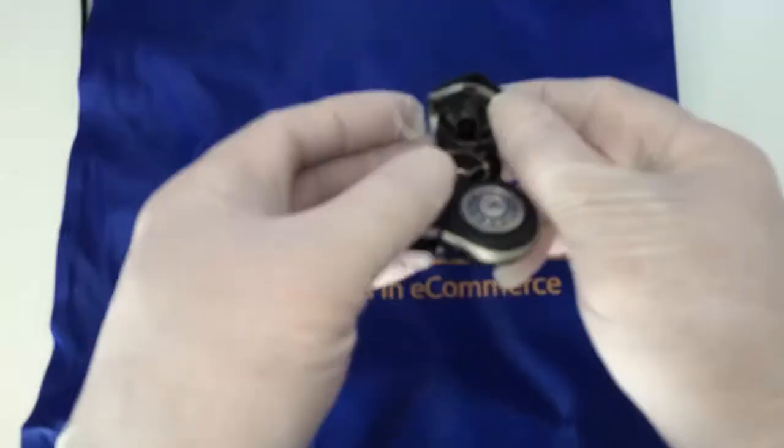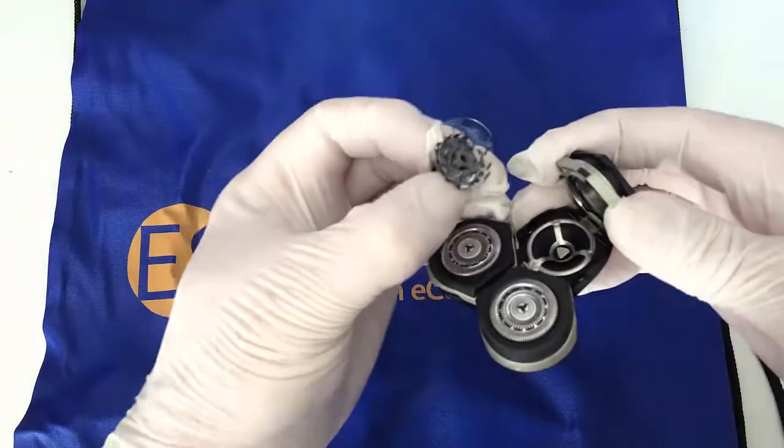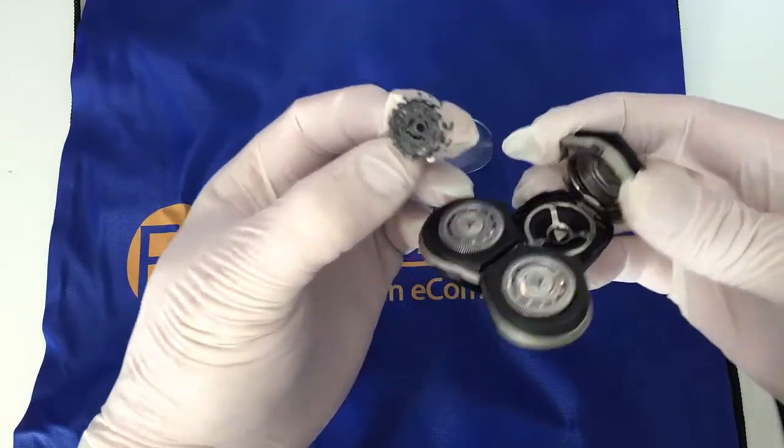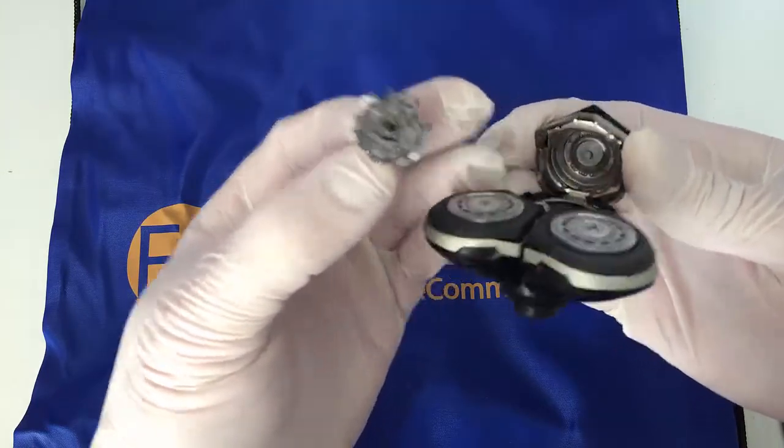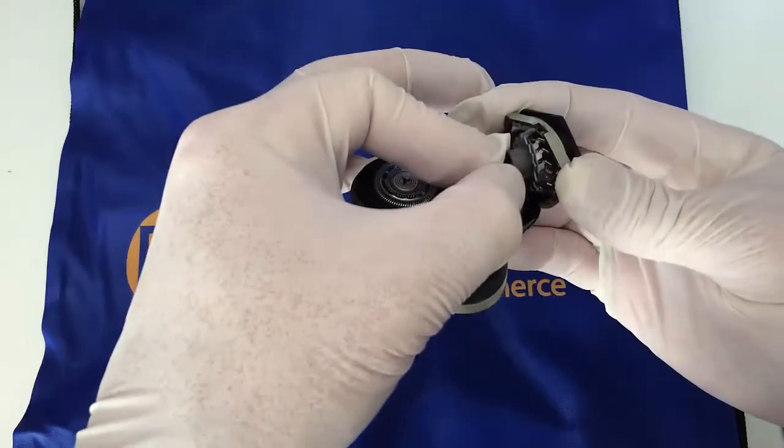You can then take the cutting blade out of the compartment. That's the cutting blade. If you want to give it a really good clean, this is the routine you would need to follow.